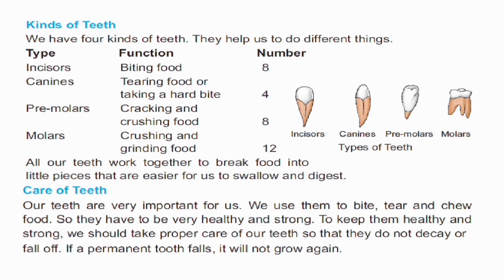First, incisors — function: biting food, number: 8. Next, canines — function: tearing food or taking a hard bite, number: 4. Then, pre-molars — function: cracking and crushing food, number: 8. Finally, molars — function: crushing and grinding food, number: 12.